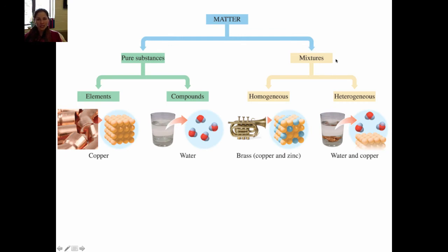Mixtures are mixtures of more than one type of thing. You can have a homogeneous or a heterogeneous mixture. The book uses brass as an example — brass is a metal made of copper and zinc. Copper is an element and zinc is an element, so this is a mixture of more than one type of element in a solid solution called an alloy. In this cartoon, the dots representing atoms are different colors, showing a mixture of different types of atoms.